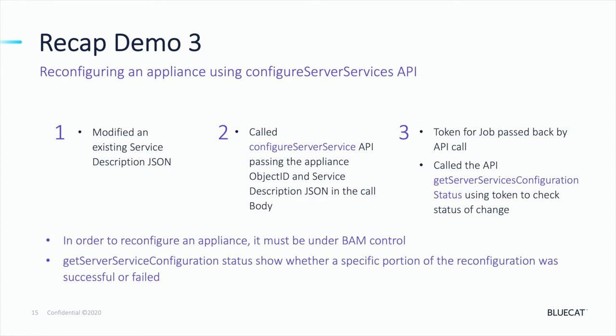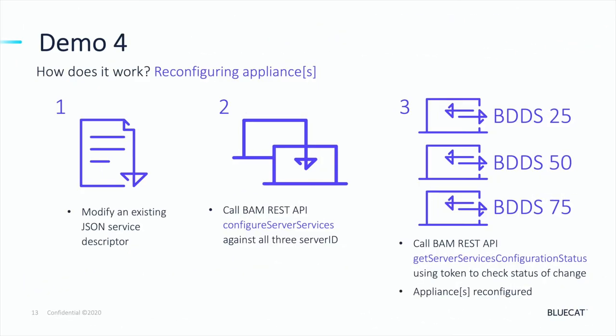The Configure API call will return a token which can be passed to the Get Server Services Configuration Status API, which monitors whether the change was correctly applied. The appliance must already be under BAM control, and it's very important to note that the detailed response given by the status call will be extremely useful in troubleshooting any change problems.